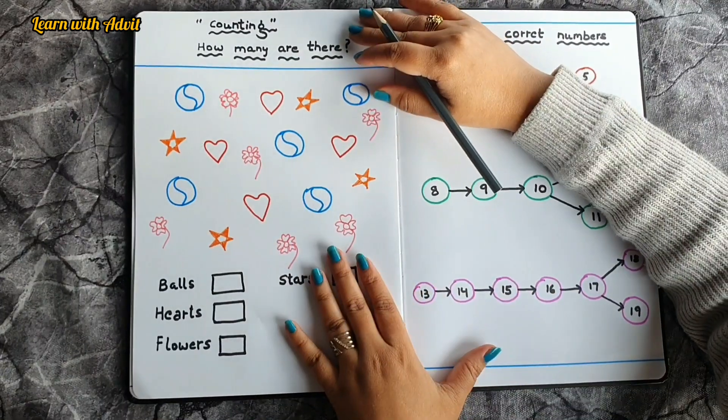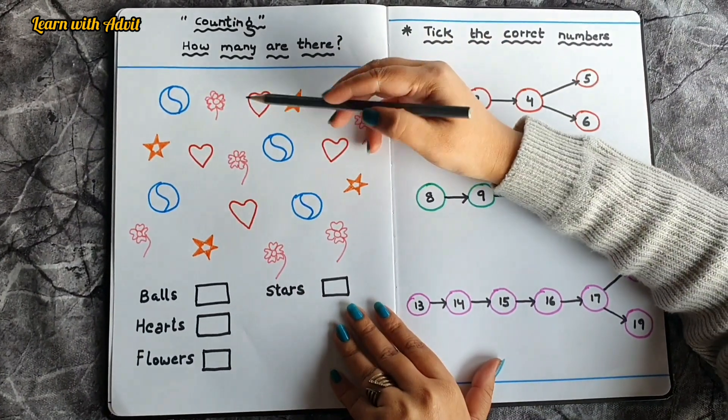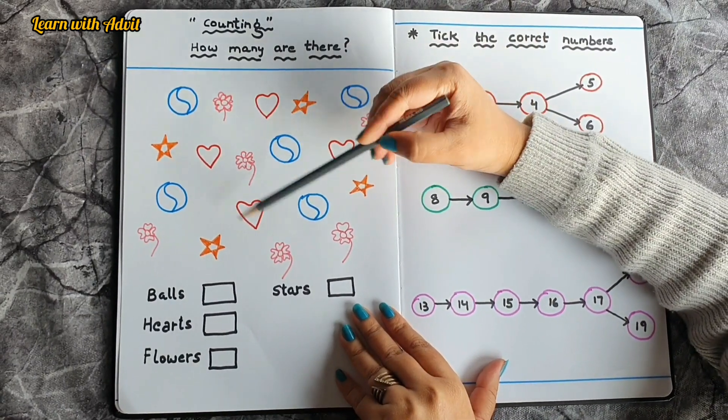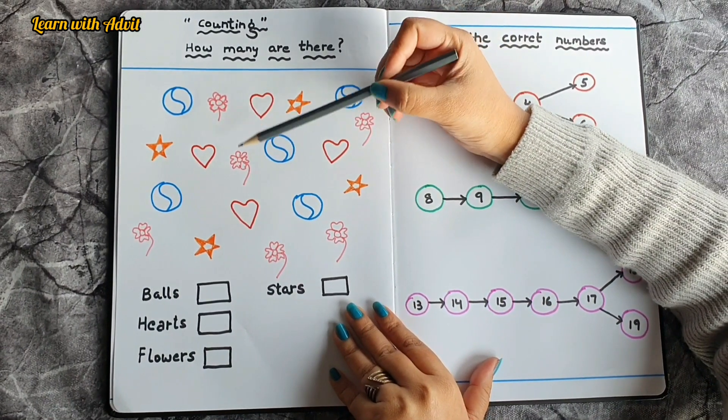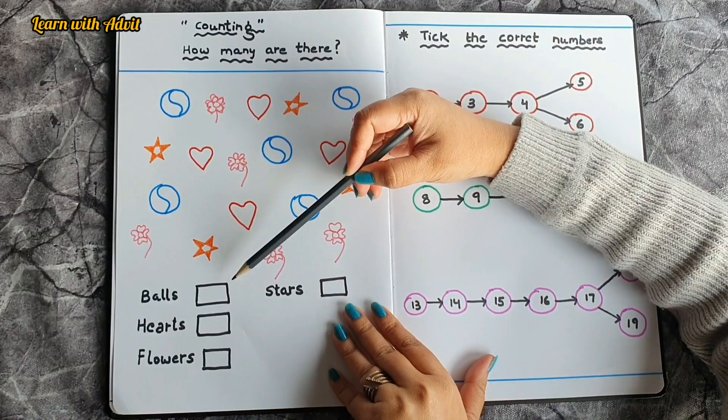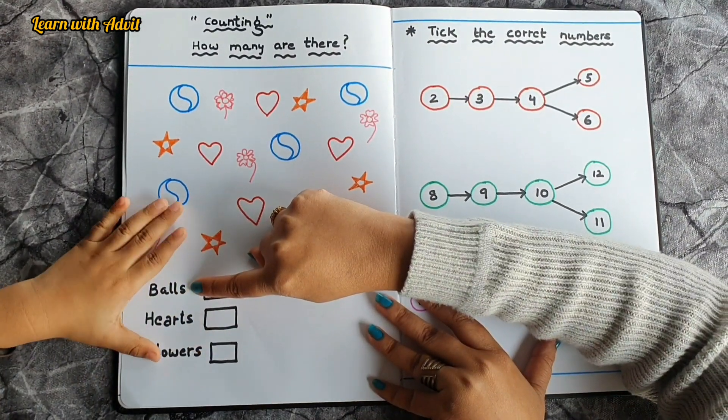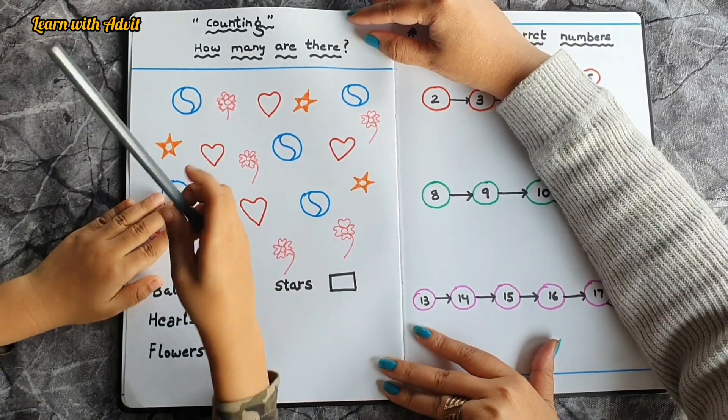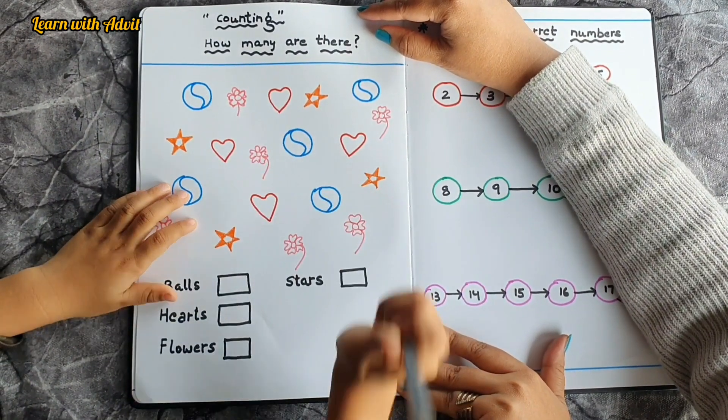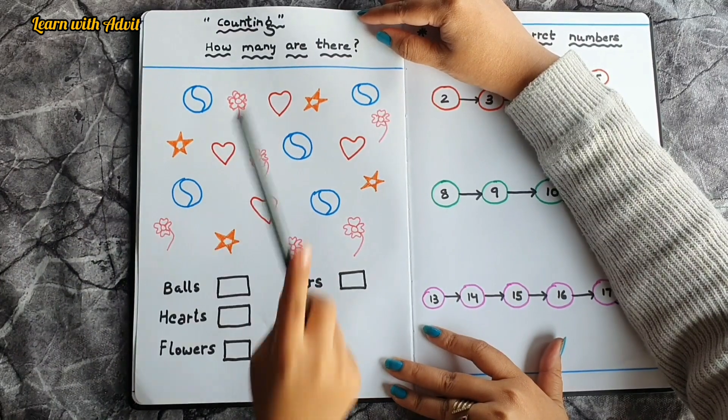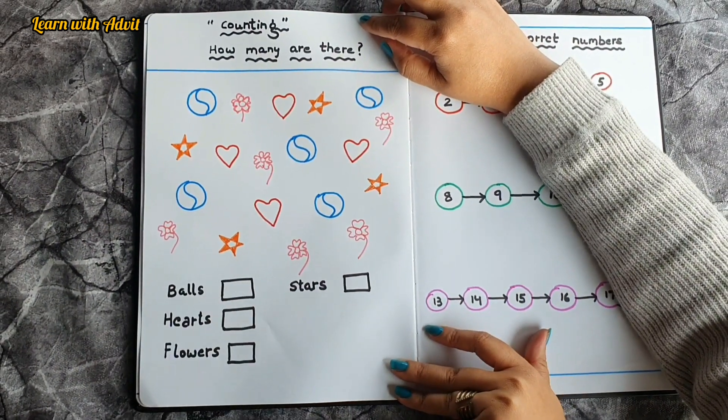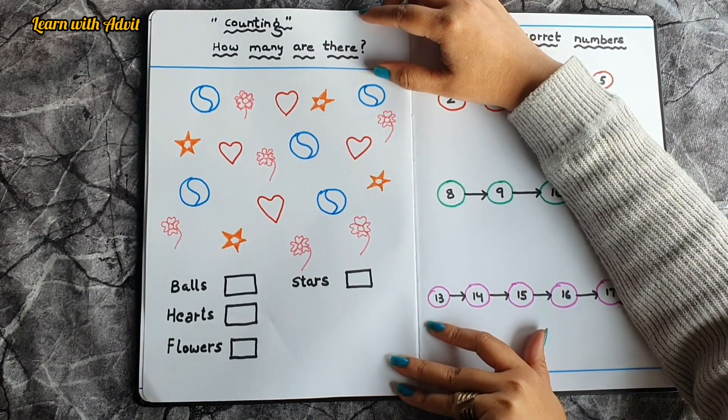In this sheet, what you have to do is count the objects from the pictures, how many there are, and you have to write. Come on, count. How many? What's this? This is balls. So how many balls are there? One, two, three, four, one more, five. Very good, write it down.